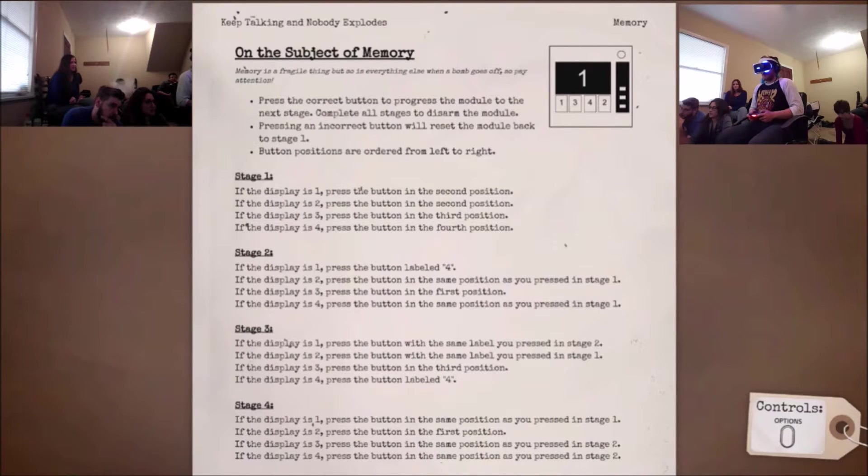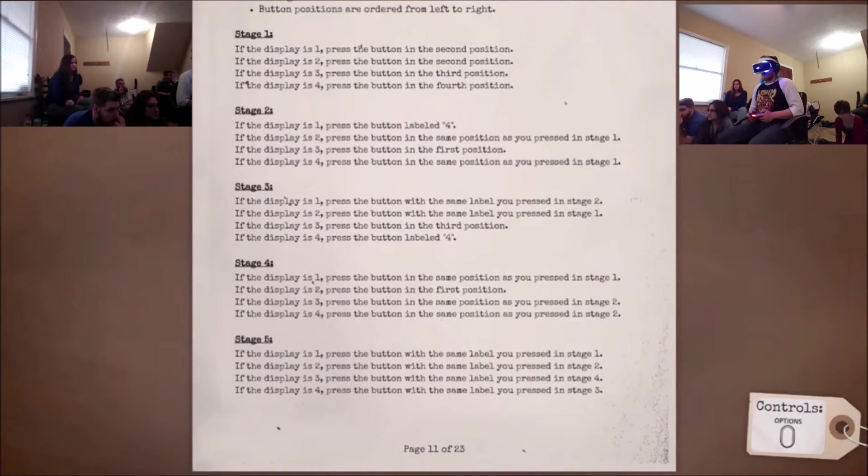All right, what's the display now? Two. Press the button in the same position as you pressed in stage one, so the fourth position. So it's been three, three so far. The number is four. Press the button labeled four. Okay, two, three, four. Okay, the number is a what? Press the button in the same position as you pressed in stage one. Fourth position. Three, three, four, three. Okay, and what's the display again? Four. Four. Press the button with the same label you pressed in stage three. Four.